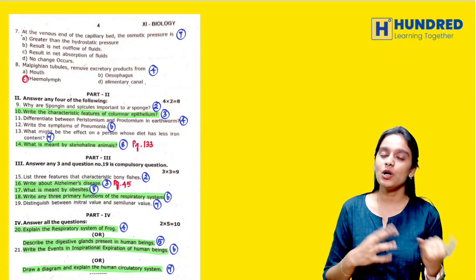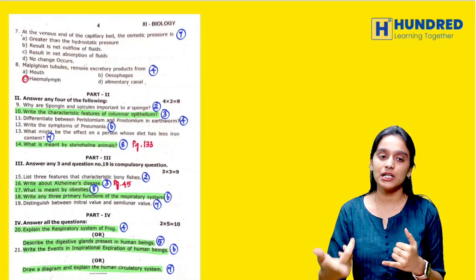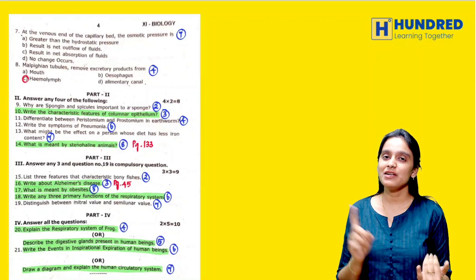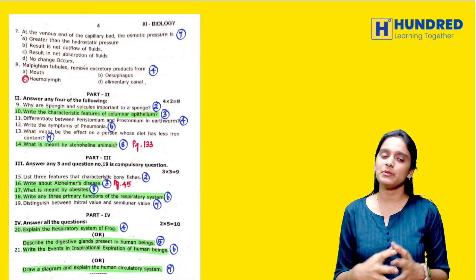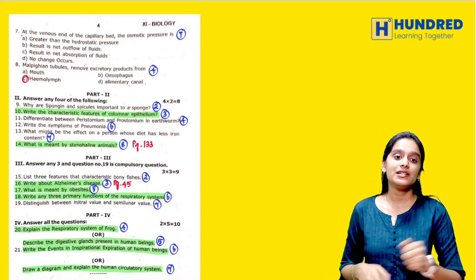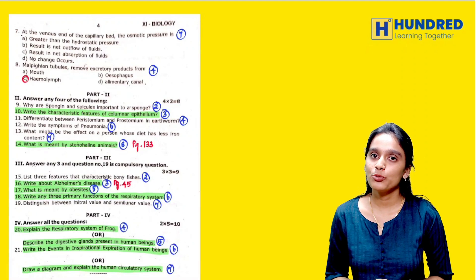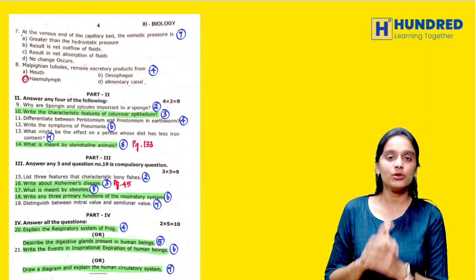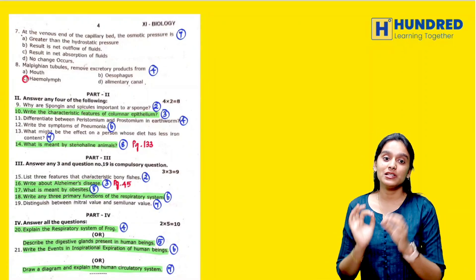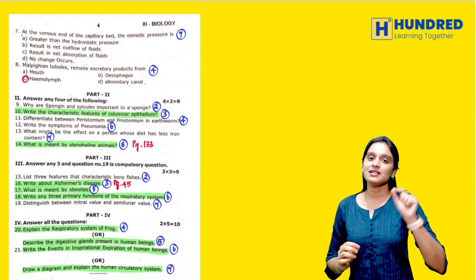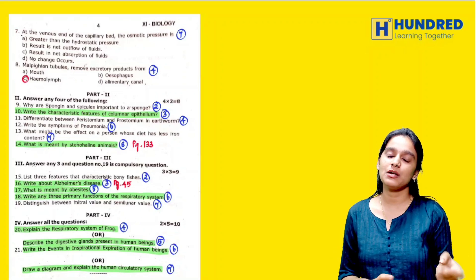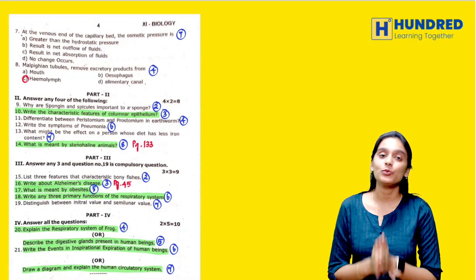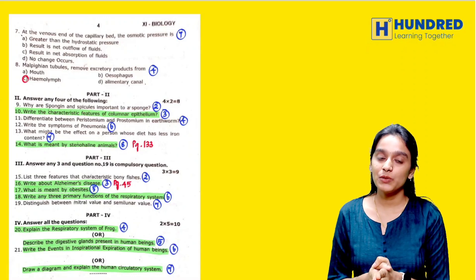5 marks, again here are 4 interior questions. Respiratory system of earthworm is book back, but expect frog respiratory system. Digestive glands present in human beings, so salivary glands, gastric glands. Write the events of inspiration and expiration of human beings in tabulation format, that is an important question. Draw a diagram and explain the human circulatory system from 10th standard. This question will not be very tough, so you can see this question. This is biosuology and biobotany questions to expect.